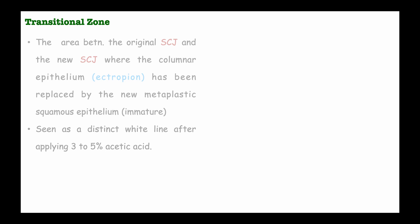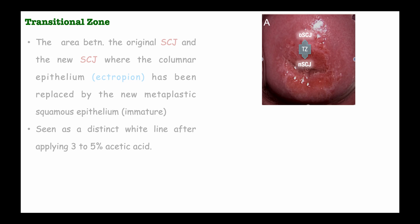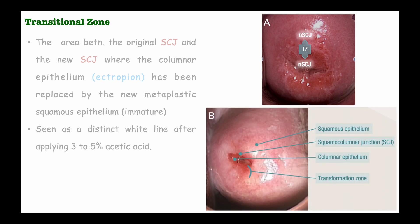On the diagram on the right, we find that this was where the old squamous columnar junction was. Originally this was where we had the squamous columnar junction, but now we have the new squamous columnar junction further down. The area between the old and the new squamous columnar junction is the transitional zone, made up of immature squamous epithelial cells. This area shows the squamous epithelium, the columnar epithelium, the squamous columnar junction, and the transitional zone.